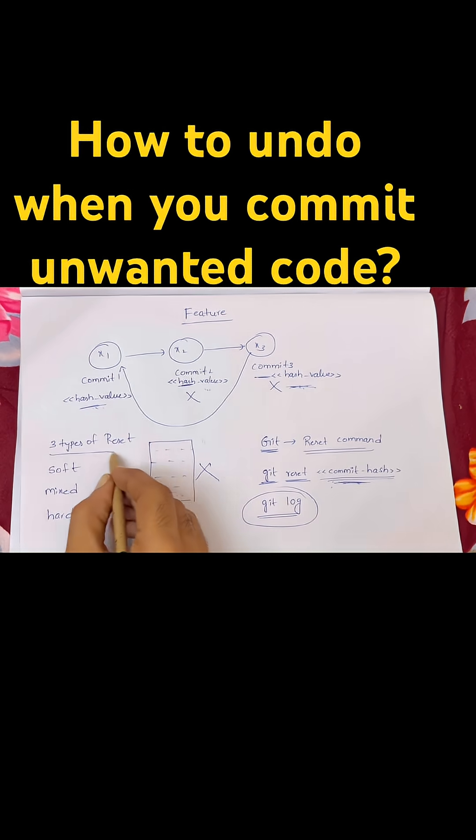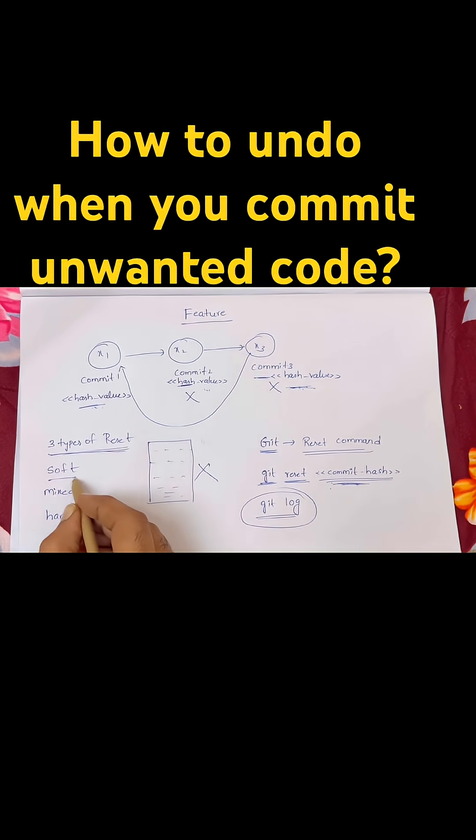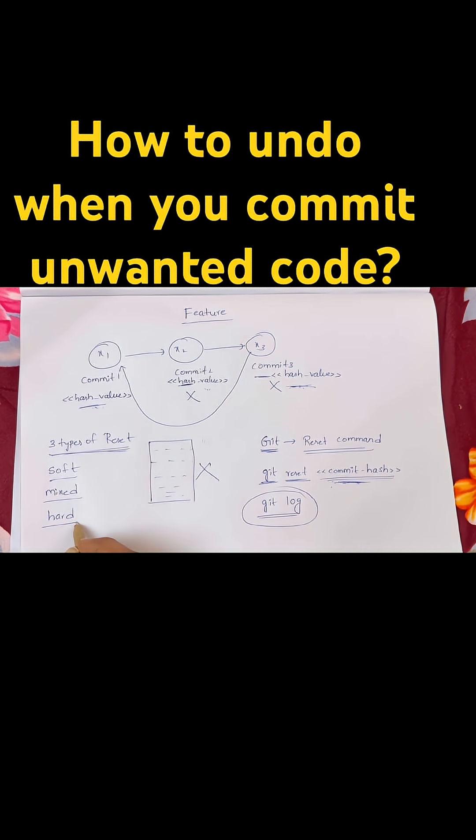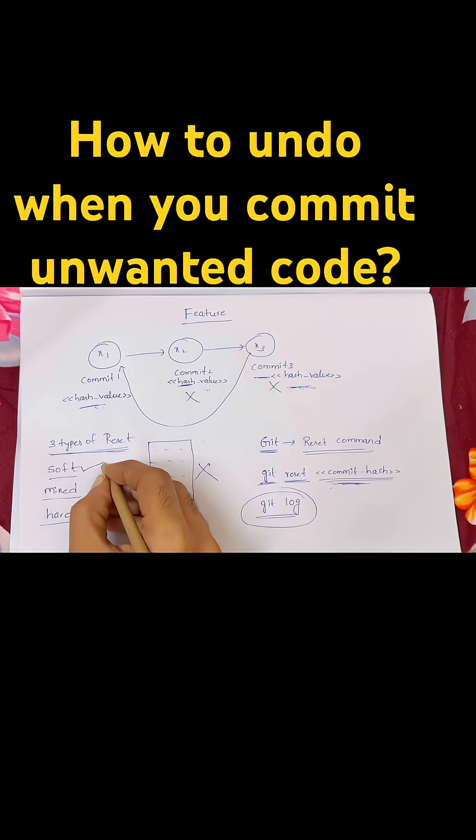There are three types of git reset: soft, mixed, and hard reset. When you do soft reset, it deletes the commit history and the code changes are saved into staged changes.